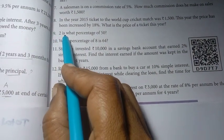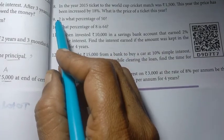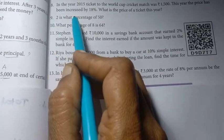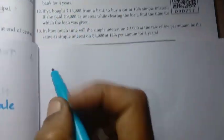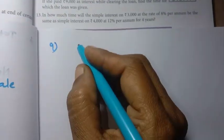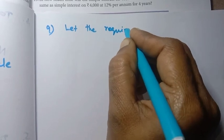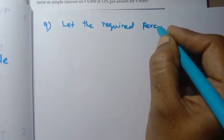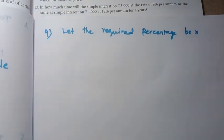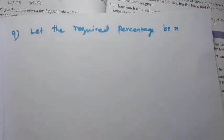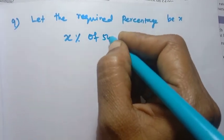Problem 9: 2 is what percentage of 50? Let the required percentage be x. So x percentage of 50 is 2, meaning x divided by 100, multiplied by 50, equals 2.